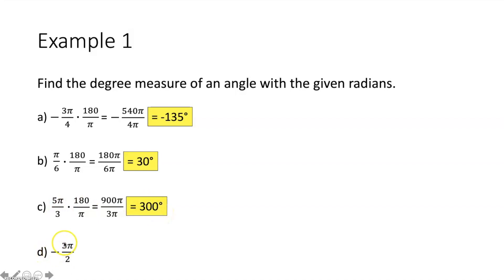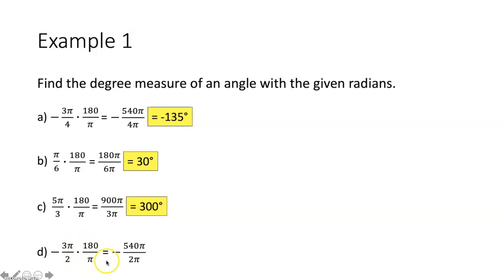Part d, we have negative 3π over 2 radians and want to convert that to degrees. We multiply our radian measure by 180 over π. The π's cancel out, and 540 divided by 2 gives you 270. Therefore, negative 3π over 2 radians is equivalent to negative 270 degrees.